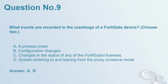Question number 9: What events are recorded in the crash logs of a FortiGate device? Choose two. A. A process crash. B. Configuration changes. C. Changes in the status of any of the FortiGuard licenses. D. System entering and leaving the proxy conserve mode. Answer: A, D.